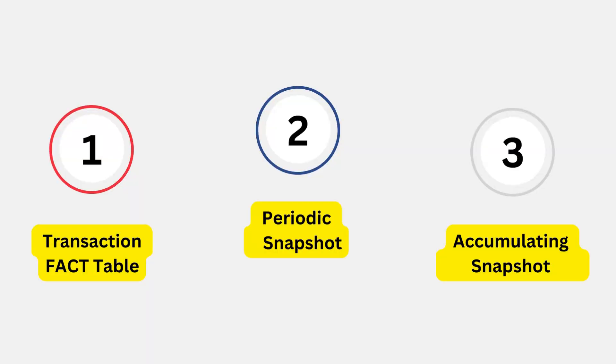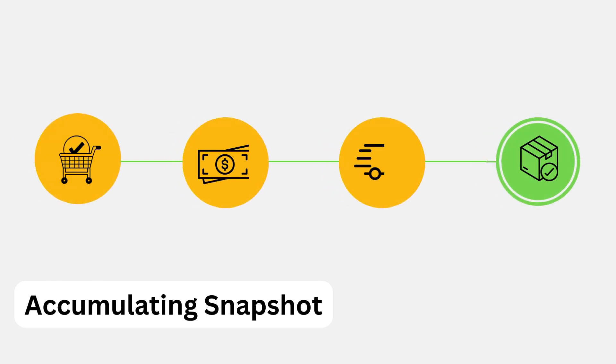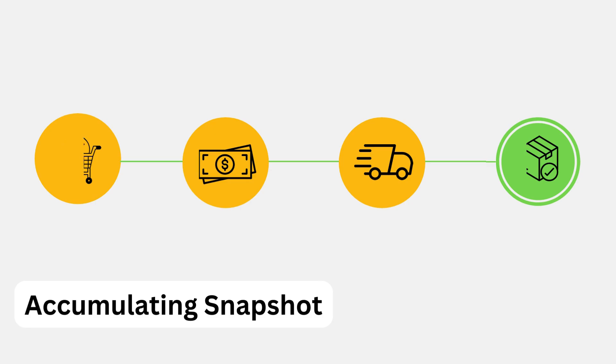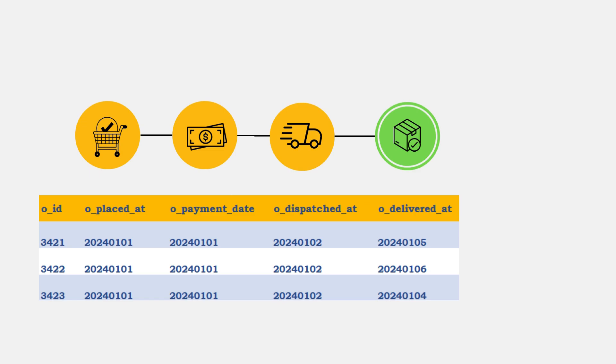We talked about the sales order transaction table where we keep all transaction details, and we have also talked about their periodic aggregation. Now let's talk about the use case where we want to track the entire end-to-end details of the business process. For this purpose, we use the Accumulating Snapshot Fact Table. Here, each record captures the entire life cycle of the business event, which has a definite lifetime. In our case, for an e-commerce sales event, it has a definite lifetime of 5 to 15 days, starting from order placement to the customer delivery. Each row represents the entire lifetime of the event and provides details like when the order was placed, when it was dispatched, dispatched location, delivery location, and when it was delivered. Each milestone of the workflow is captured and updated in the table.